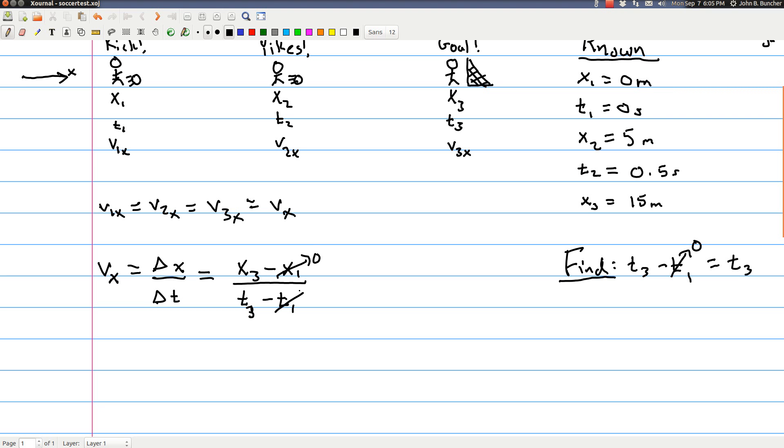So I have the same initial time as I do initial position. Those are both at 1. Same final time and final position. Those are both at 3. We said x1 was going to be at 0 meters and t1 was at 0 seconds. So vx is x3 divided by t3. Excellent. Okay. So now I know x3, right? That's in my knowns. But I don't know t3 or vx. Those are both things I don't know.